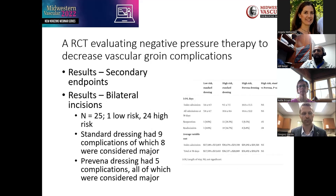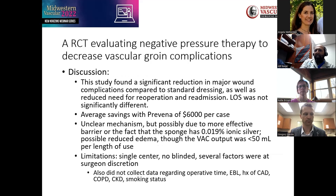Looking at secondary endpoints among patients with bilateral incisions — 25 patients, 24 high risk — standard dressings had nine complications of which eight were major; Prevena had five complications, all considered major. The discussion noted a significant reduction in major wound complications compared to standard dressings, as well as reduced need for reoperation and readmission. Length of stay was not significantly different, but the average savings with Prevena was about $6,000 per case.